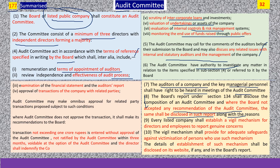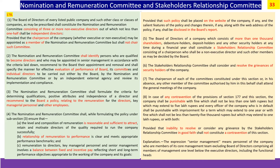Section 177 also mandates that the listed company shall have a vigil mechanism for adequate safeguards against victimization of persons, and such mechanism shall be disclosed on the website of the company. Section 178 talks of formation of two committees: one known as the nomination and remuneration committee, and the second known as the stakeholders relationship committee.